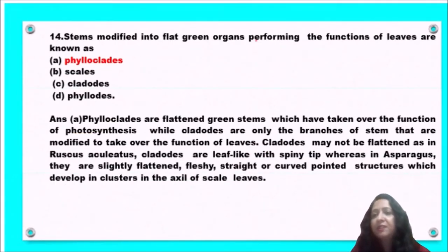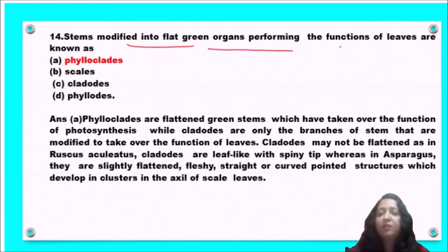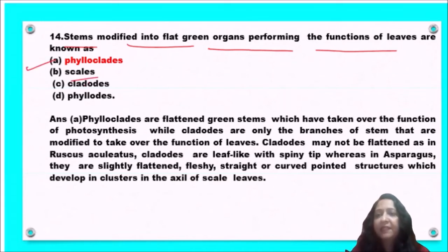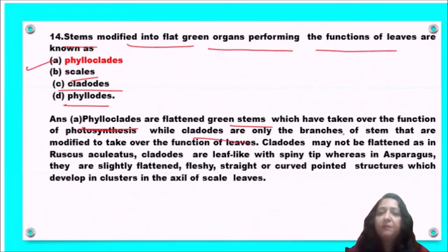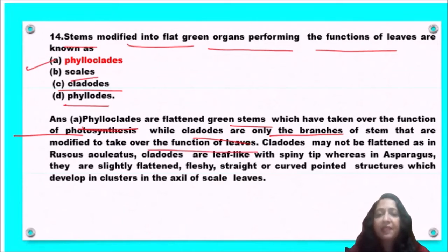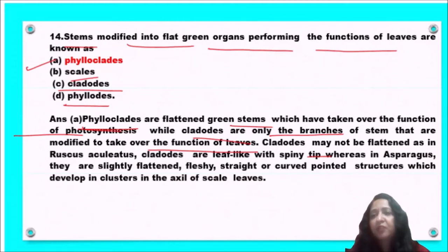Next question: stems modified into flat green organs performing the functions of a leaf are known as phylloclades, scales, cladodes, or phyllodes? Phylloclades are flattened green stems responsible for photosynthesis, while cladodes are branches of stem modified to take over the function of leaves and may be flattened or spiny. So option A, phylloclades, is the correct answer.